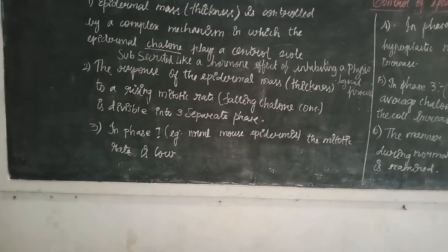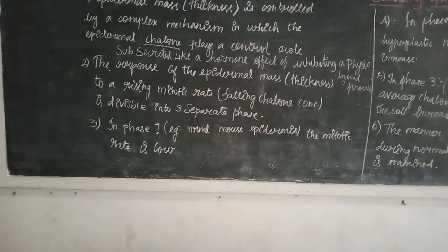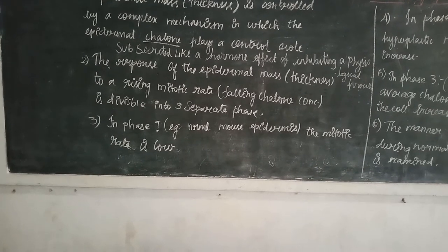In first phase, example controlled mouse epidermis, the mitotic rate is low. Here the mitotic cell division appears very lowly.